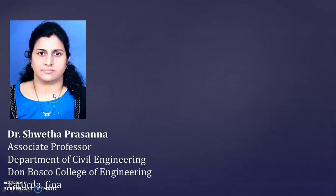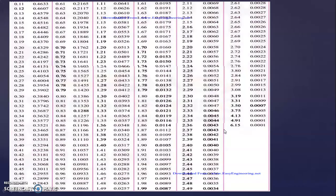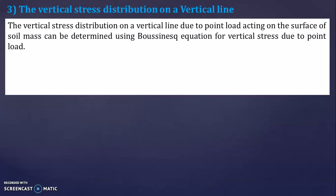Hello my dear students. Last class I explained about the pressure distribution diagram for the vertical stress on isobars and also the vertical stress on a horizontal plane. Today I will discuss about the vertical stress distribution on a vertical line. The vertical stress distribution on a vertical line due to a point load acting on the surface of a soil mass can be determined using Boussinesq's equation for vertical stress due to a point load.